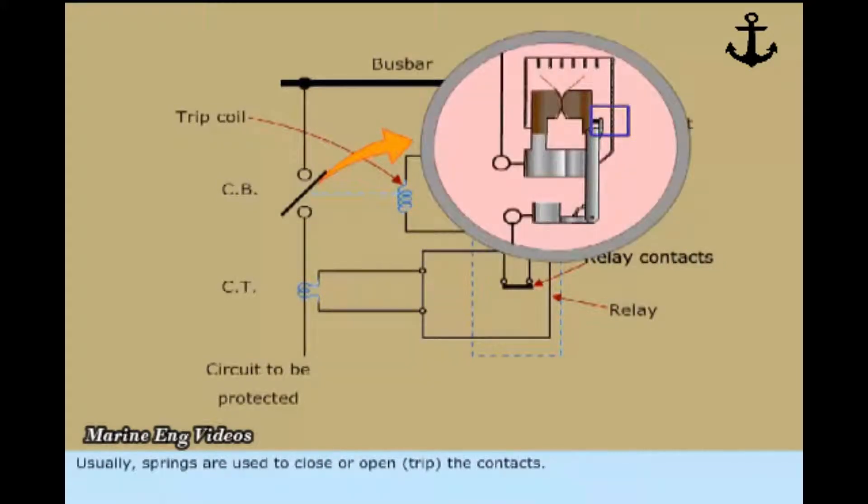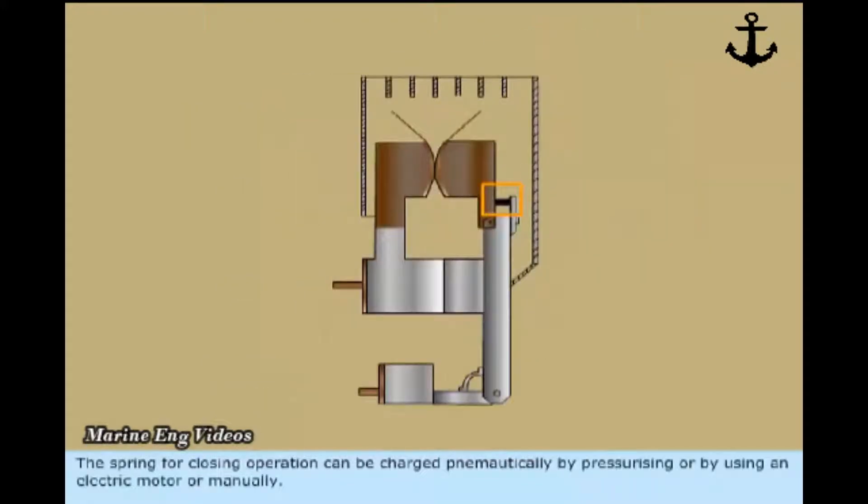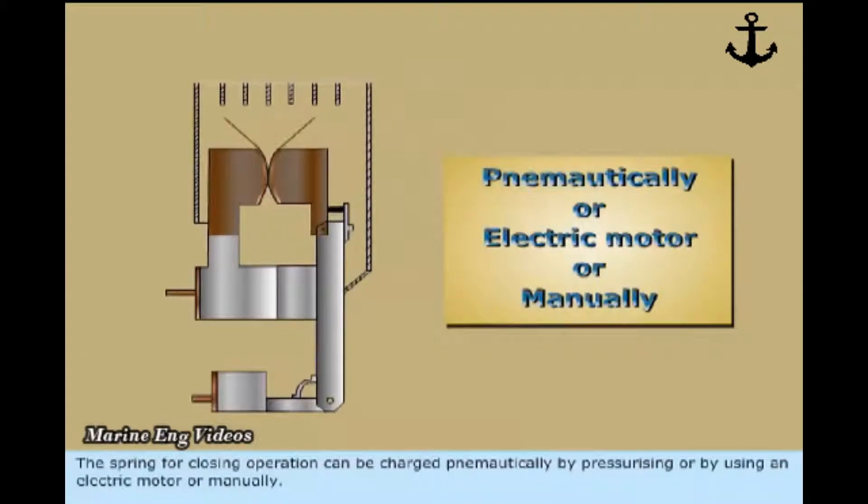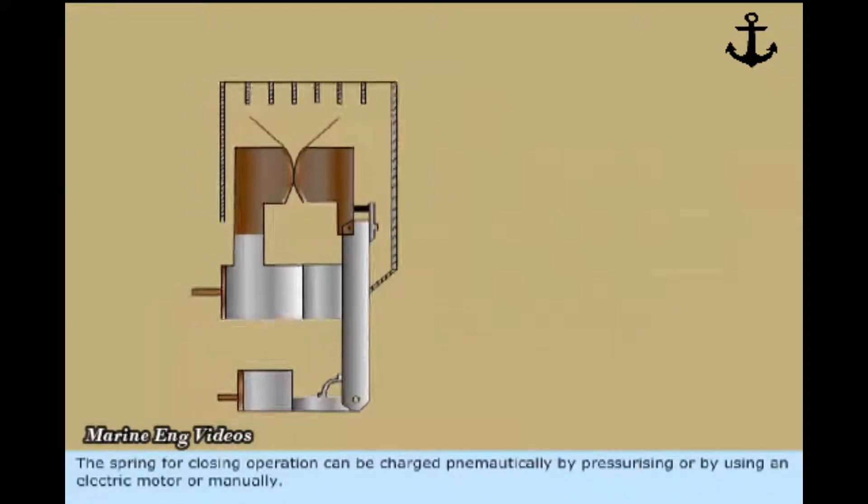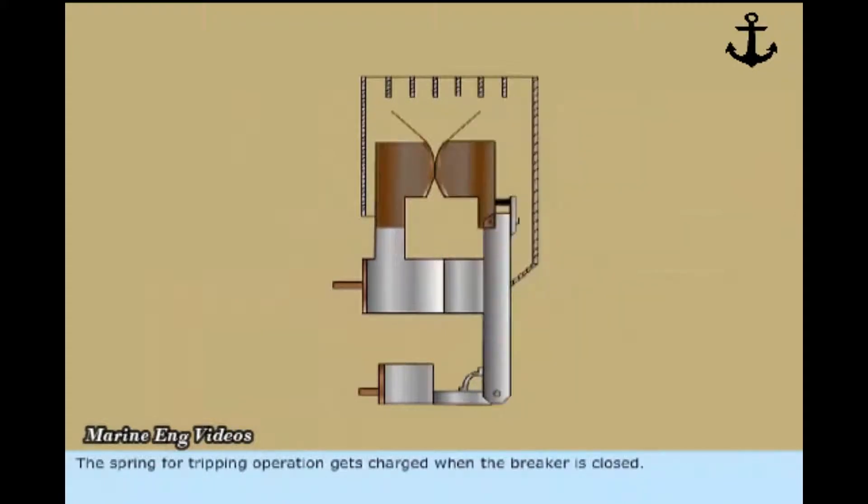Usually, springs are used to close or open trip the contacts. The spring for closing operation can be charged pneumatically by pressurizing or by using an electric motor or manually. The spring for tripping operation gets charged when the breaker is closed.